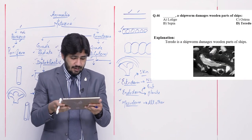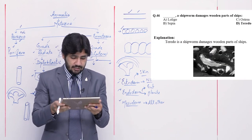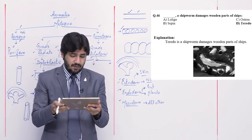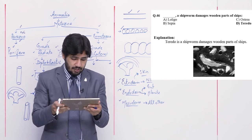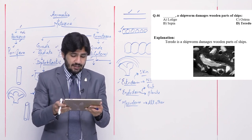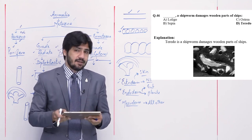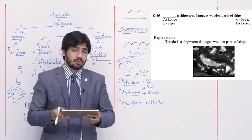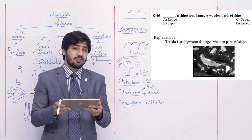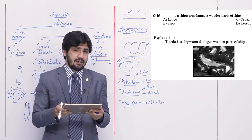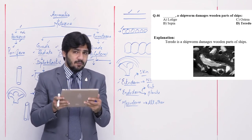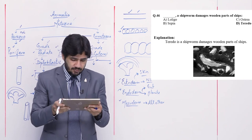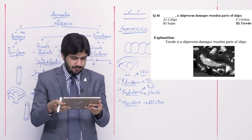Question number 46: blank — a shipworm — damages the wooden part of ships — alpha Nudibranch, beta Sepia, charlie Ostrea, and delta Teredo. Teredo is called shipworm because it damages the wooden parts of ships. Right option is delta.